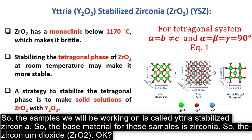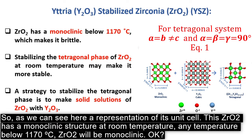The samples you'll be working on are what's called yttria-stabilized zirconia. The base material for these samples is zirconia — zirconium oxide. As we can see here, a representation of its unit cell. This zirconium oxide has a monoclinic structure at room temperature, so any temperature below 1,170 degrees Celsius, zirconium dioxide would be monoclinic.